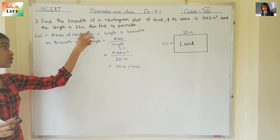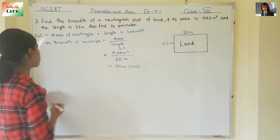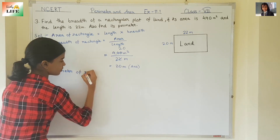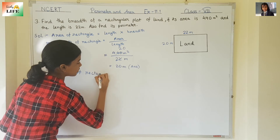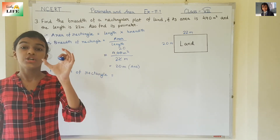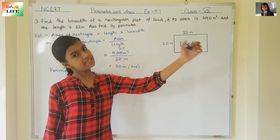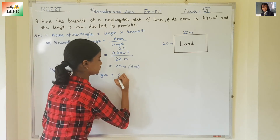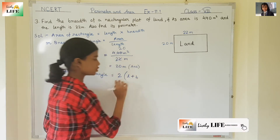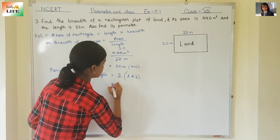Now, it is also telling us to find the perimeter. We need to find the perimeter of this rectangle. So, perimeter of a rectangle — what is the formula? It is 2 into L plus B, that is 2 multiplied by length plus breadth. If length is L and breadth is B, then 2 into L plus B. This is the formula of perimeter of a rectangle. You have to learn this one.